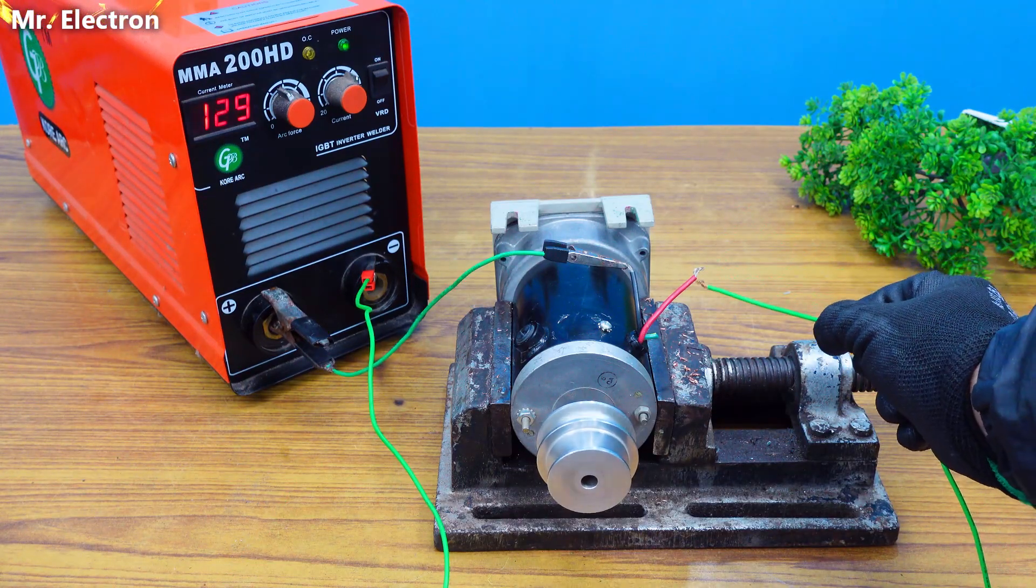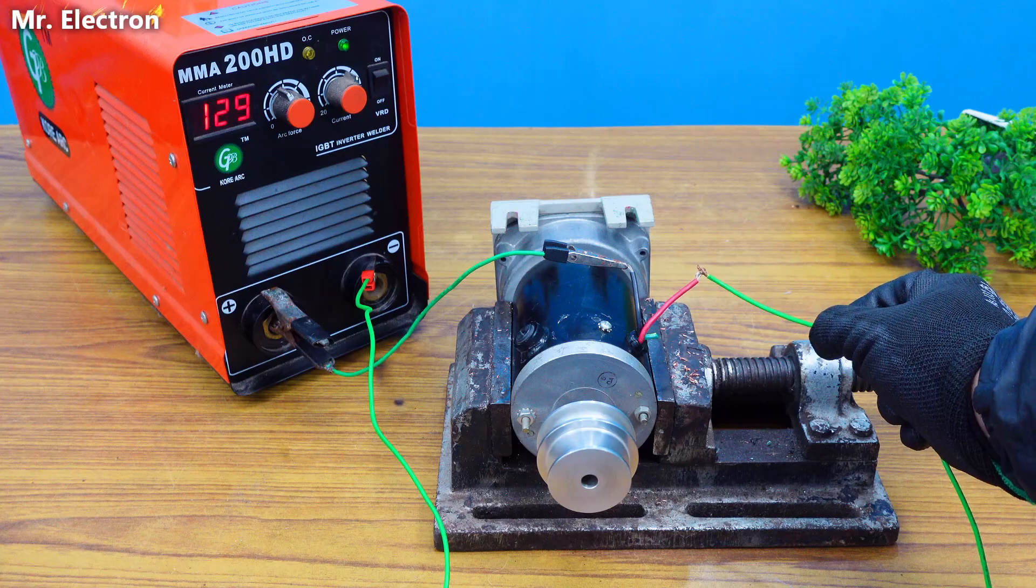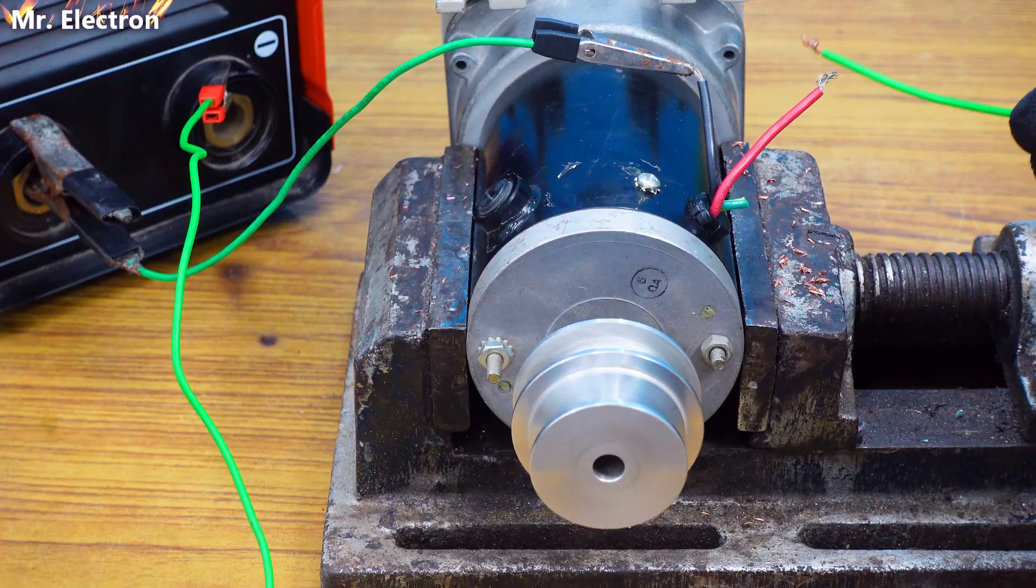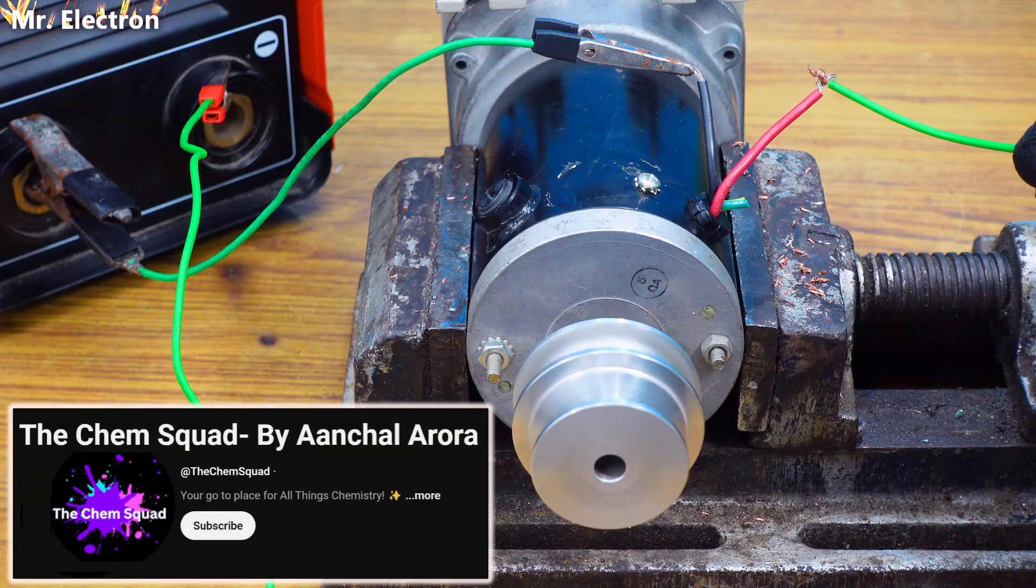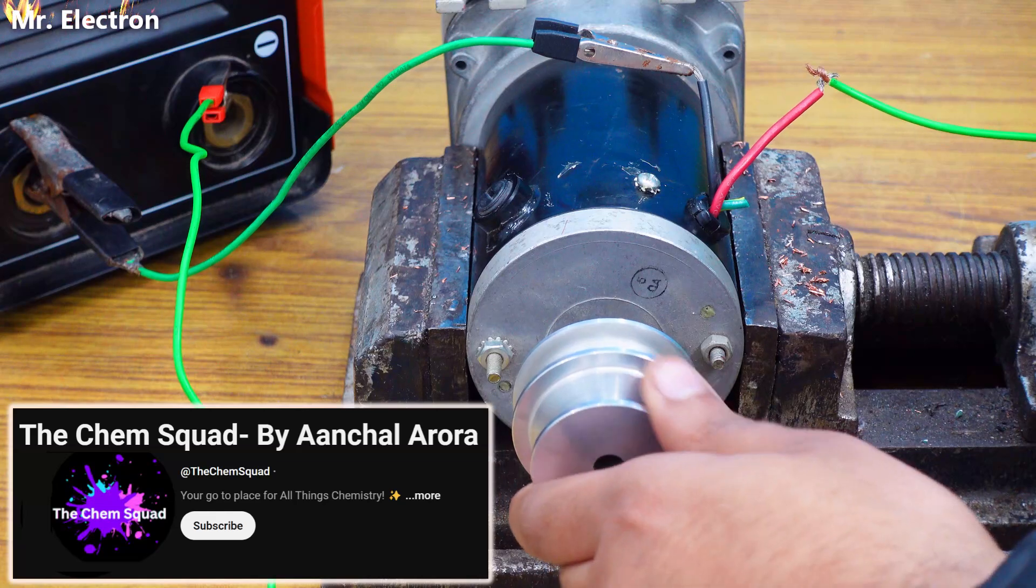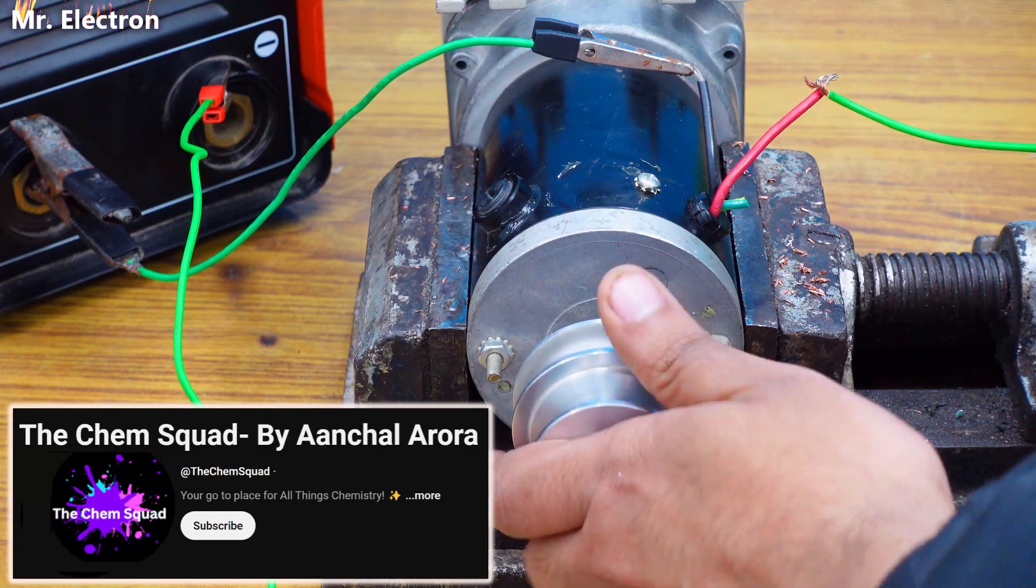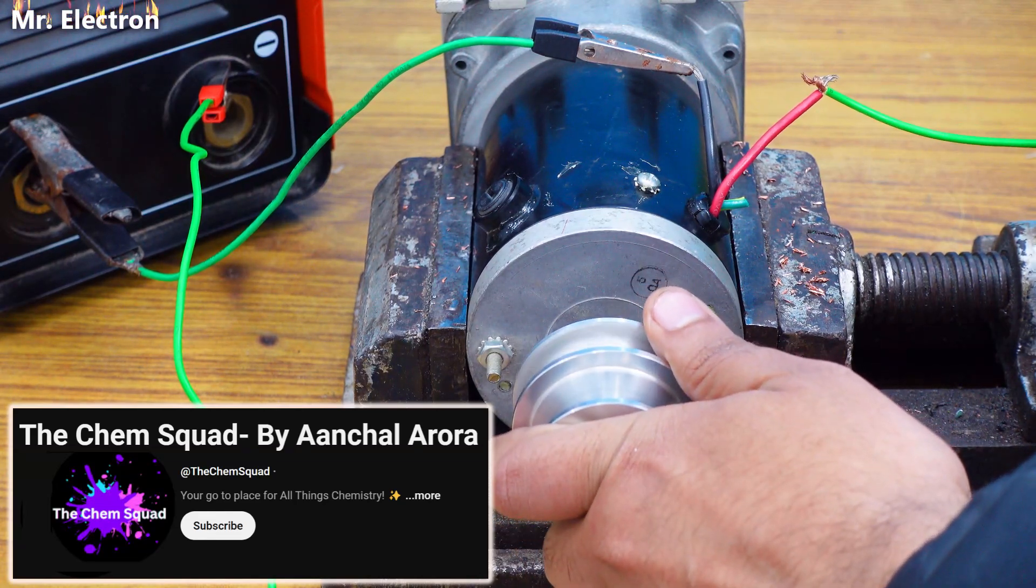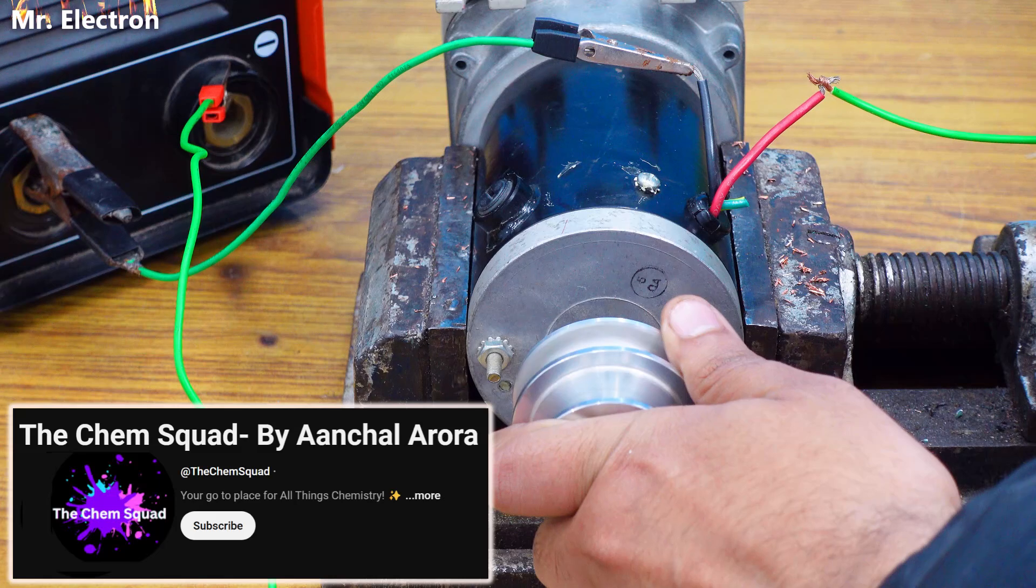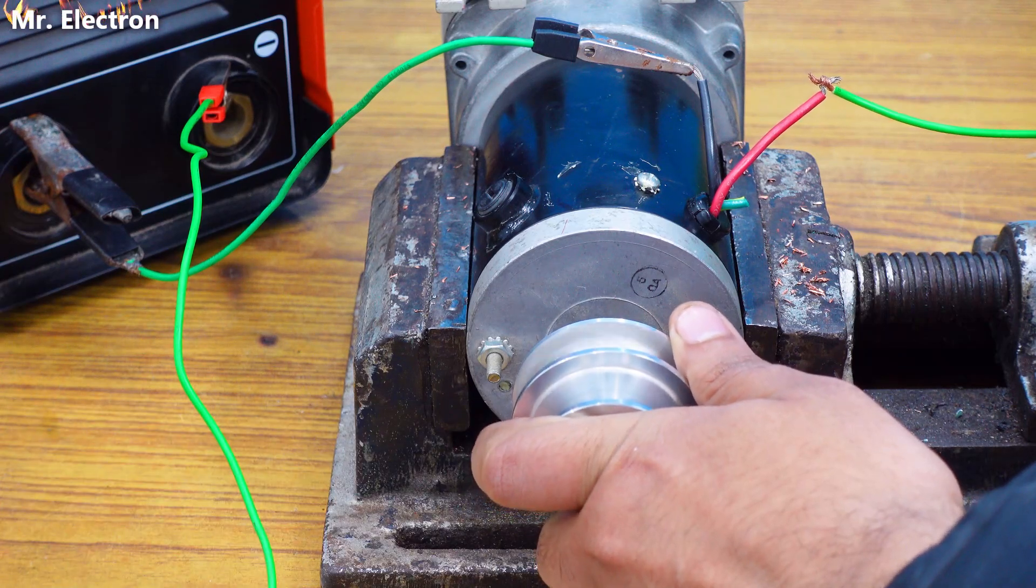Also friends, if you are planning for JEE mains and chemistry is giving you nightmares, I would recommend this Chem Squad channel by Archal Aurora. Her daily detailed lessons are going to help you a lot. This channel link will be provided in the description, you can check it out. So coming back to the experiment, you can see that the torque is good although the speed is low, but still it is useful.